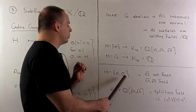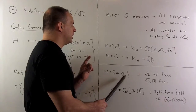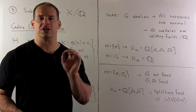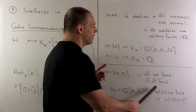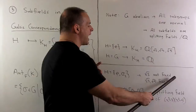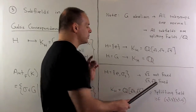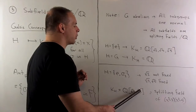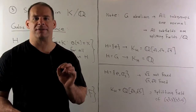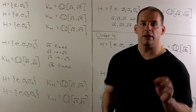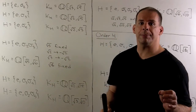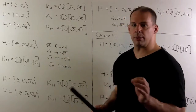For the subgroup {e, σ₂}: σ₂ carries √2 to -√2 and fixes √3 and √5, so √2 is not fixed but √3 and √5 are. The fixed field is Q(√3, √5), which is the splitting field of (x² - 3)(x² - 5) over Q. Replacing σ₂ with σ₃ or σ₅ and repeating the argument gives three subfields for these subgroups of order 2.